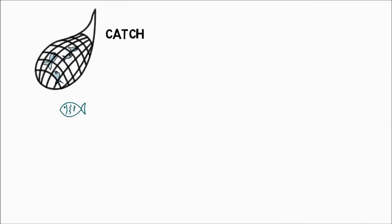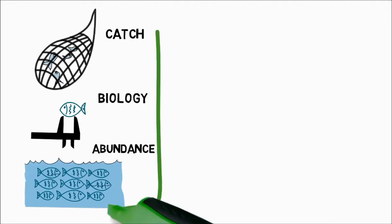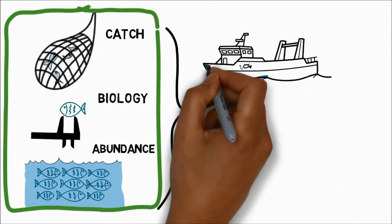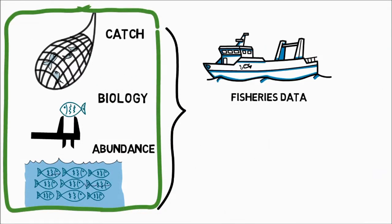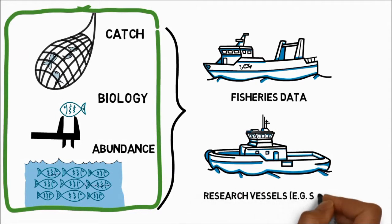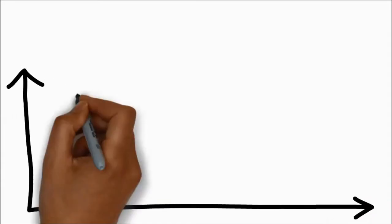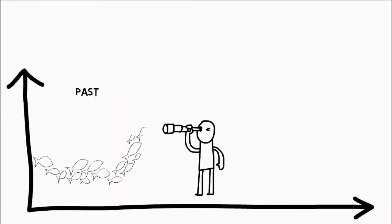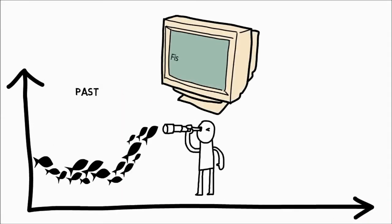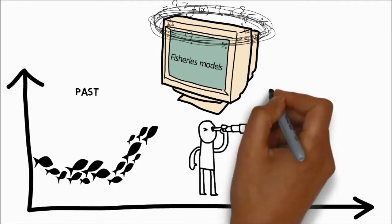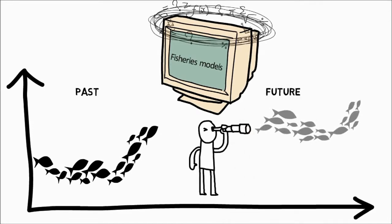Observations of catch, fish biology and fish numbers are gathered for stocks directly from the fishing industry and by scientific research vessels. Data can then be used to show how fish stocks have changed over time. And these observations can also be used in computer models to predict what will happen to fish stocks in years to come.